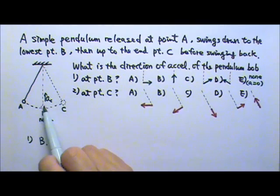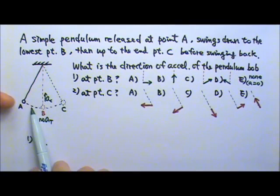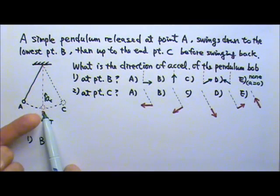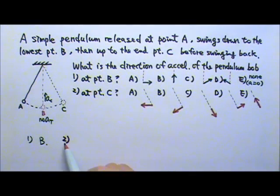Another way to look at this here is before the object gets to B, it is speeding up. After it is slowing down, so just right at that moment at B, there is no speed change. That's why there is no tangential acceleration. Now let's look at number two.